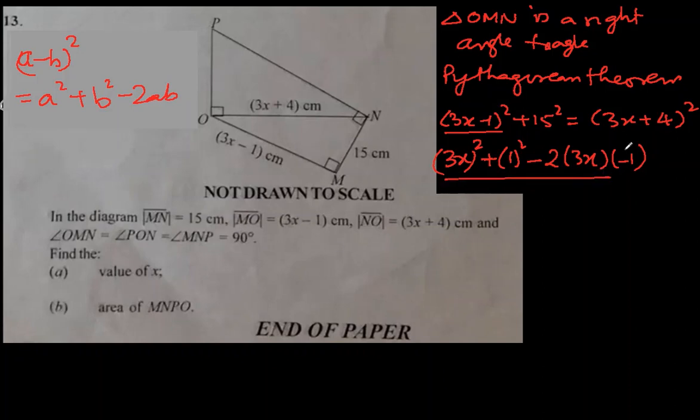A minus b whole square is always a square plus b square minus 2ab and this is what I used here. Now, 15 square is 225 will be equal to, we do the same identity but with a plus. If this becomes a plus b whole square will be a square plus b square plus 2ab. So 3x square plus 4 square plus 2 times 3x times 4.